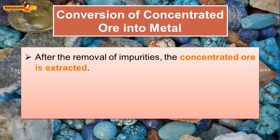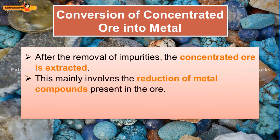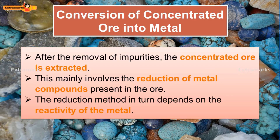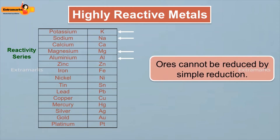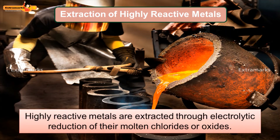After the removal of impurities, the concentrated ore is extracted. This mainly involves the reduction of metal compounds present in the ore. The reduction method in turn depends on the reactivity of the metal. The ores of highly reactive metals such as potassium, sodium, magnesium, and aluminium cannot be reduced by simple reduction. These metals are extracted through electrolytic reduction of their molten chlorides or oxides.